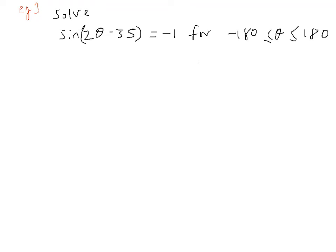Okay, so the third and final example I'd like to consider is one in which we don't have a theta by itself, but actually theta is multiplied by something or added or subtracted by a number. So here we've got 2 theta minus 35. Also our limits are from minus 180 all the way to 180.